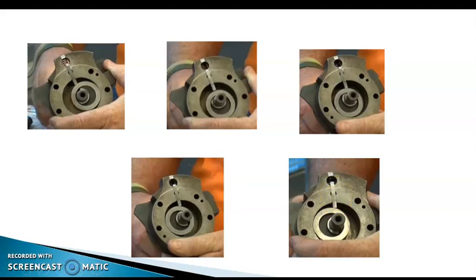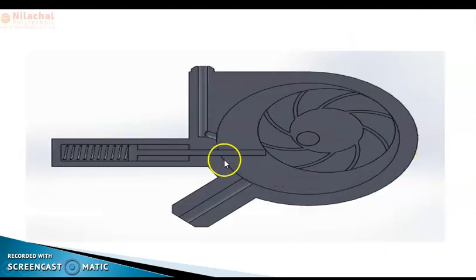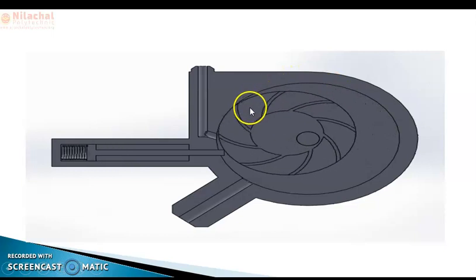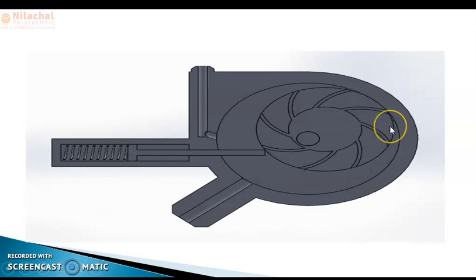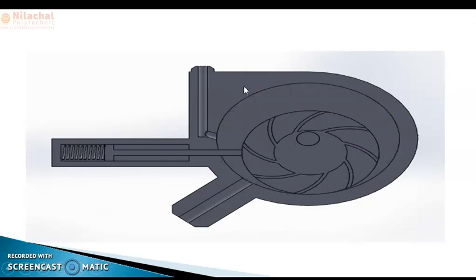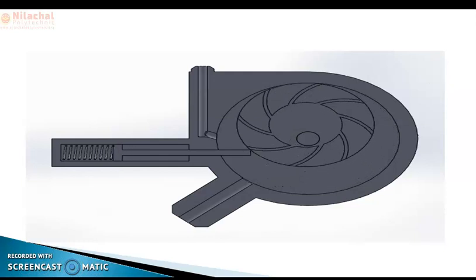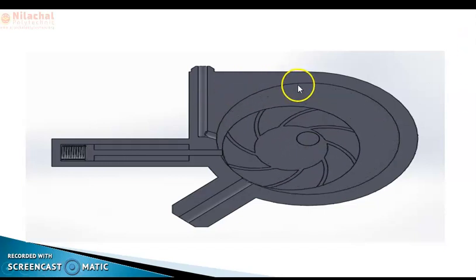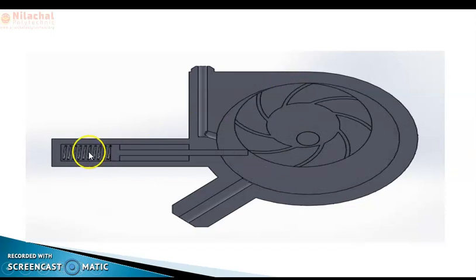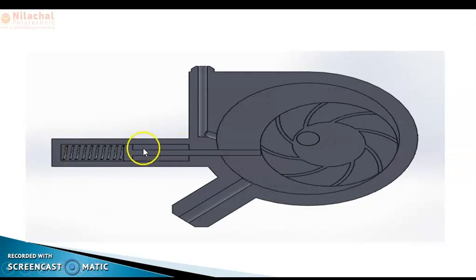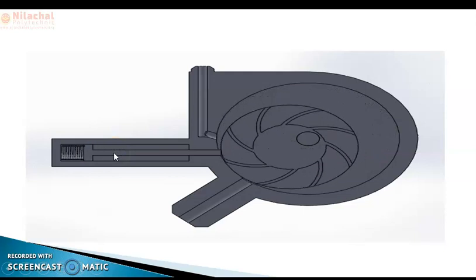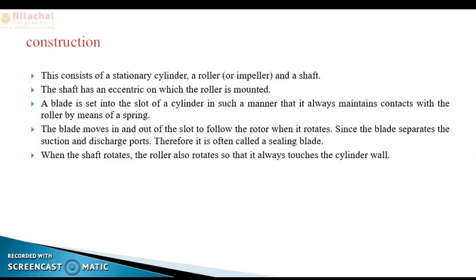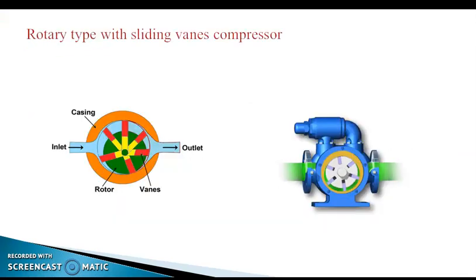In the animation video you can observe the roller moving eccentrically inside the cylinder wall — sometimes nearer, sometimes farther away. When it is nearer to the cylinder wall it is compressing, and when it is farther away it is performing suction. So suction and compression happen simultaneously, making it a continuous process. The spring compresses when the roller is nearer to the cylinder and expands when it is farther away. This concludes the explanation of the single stationary blade type rotary compressor. Thank you.